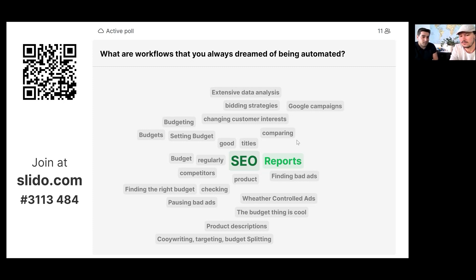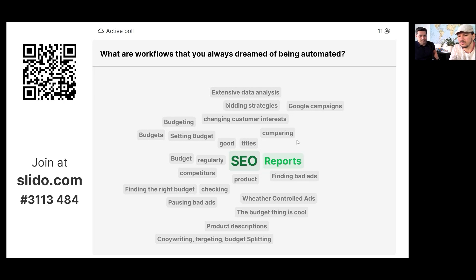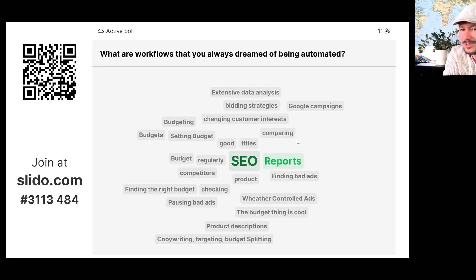One more thing worth noting: weather-controlled ads is something we're not going to cover today, but it's a typical use case for a no-code platform like ours, because you can combine data from different tools and entries and set automations based on that. For example, if you sell sunscreen in summer you don't want to advertise on rainy days, but if you sell umbrellas they'll obviously sell better on rainy days than sunny ones.